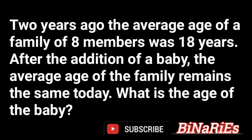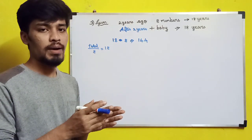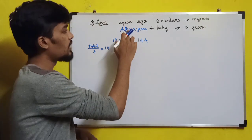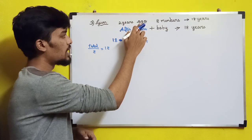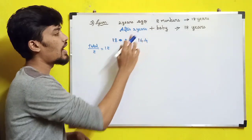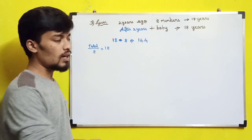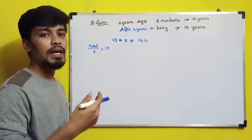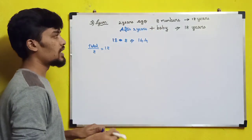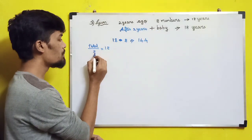Next question: two years ago, the average age of a family of 8 members was 18 years. After the addition of a baby, the average age of the family remains the same today. What is the age of the baby? Two years ago, there were 8 members with average age 18 years. After 2 years, a baby is added and the average remains the same. Total age two years ago: total divided by 8 equals 18, so total is 144.